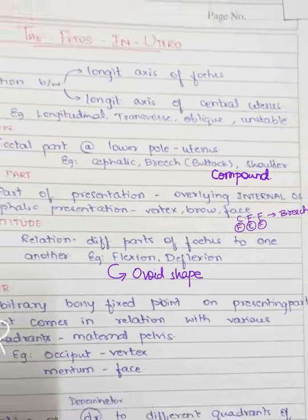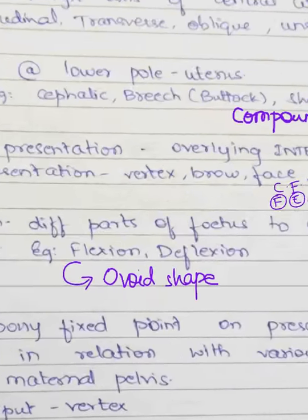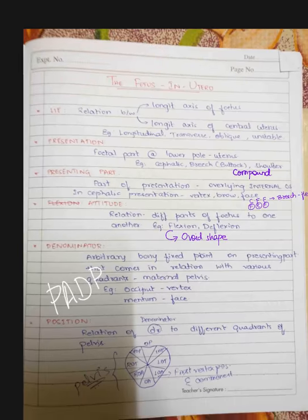Attitude is the relation of different parts of the fetus to one another. For example, if the head is flexed until it reaches the neck, it is the flexion attitude; deflexion and extension attitudes also exist. The most common is the flexion attitude, in which head flexion and flexion of most body joints gives the fetus an ovoid shape.